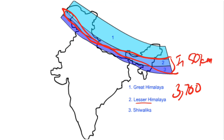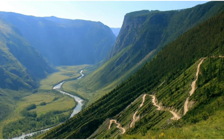Within the Lesser Himalayas, the Pirpanjal range forms the longest and most important range. The Dauladhar and Mahabharata ranges are also prominent. This region consists of famous valleys like Kashmir, Kangra, and Kulu. The Kulu Valley is in Himachal Pradesh and the region is well known for its hill stations.